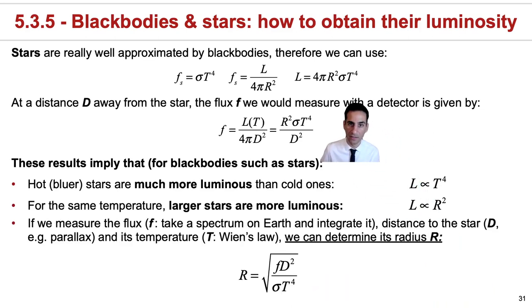And finally, actually, we can take this equation over here and re-express it for radius to mean that if we take a spectrum on Earth and integrate it, if we calculate the distance to a star, say using a parallax, and if we determine a temperature using Wien's law or perhaps a color, we can determine a radius of a star.